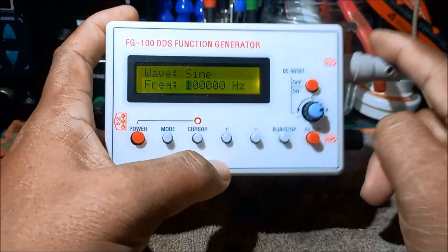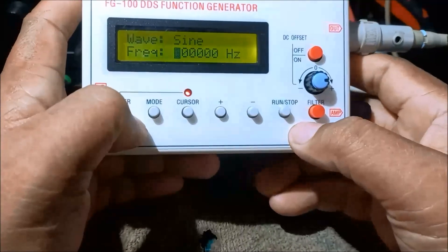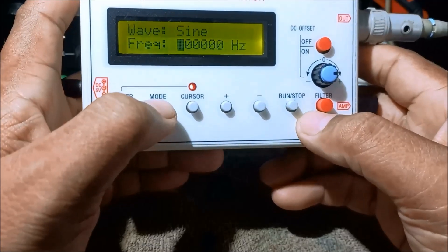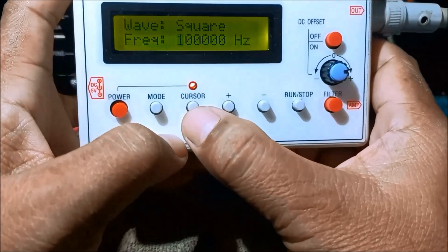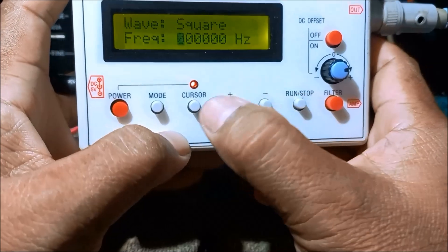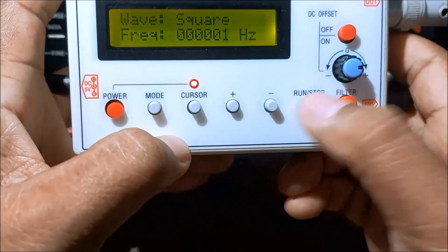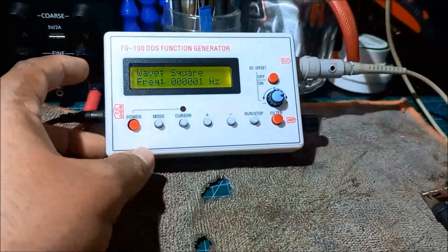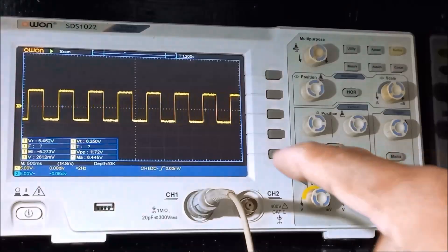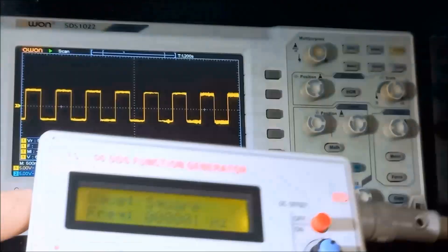We now connect the output of this generator to the input of the oscilloscope. Let us use a square wave. The mode square. And then moving the cursor, let us first set it to zero. And then cursor to 1 hertz. Plus. Then run. We can now see the waveform. We can now see here the square wave generated by this function generator.